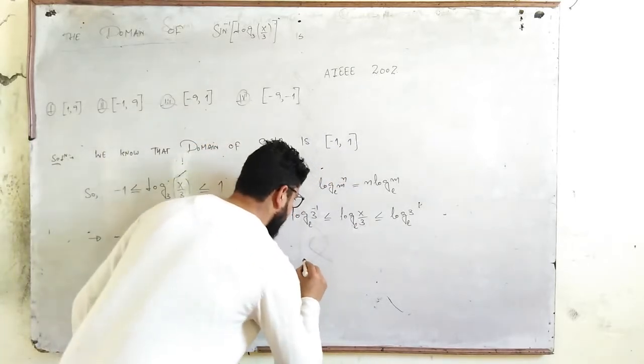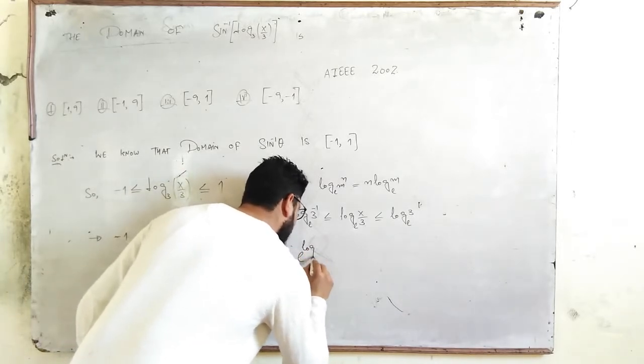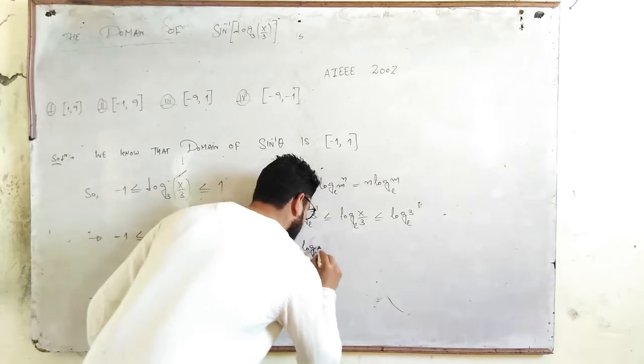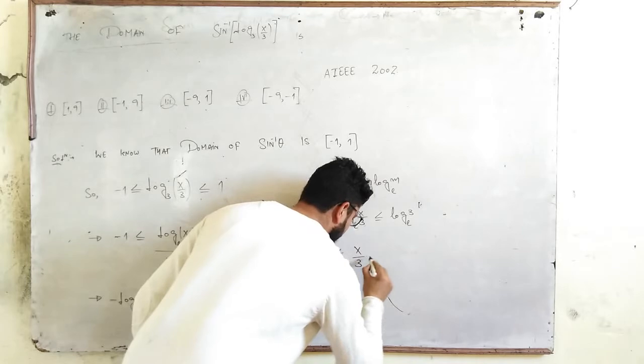So you will get e^ln(3⁻¹) ≤ x/3 ≤ e^ln(3).